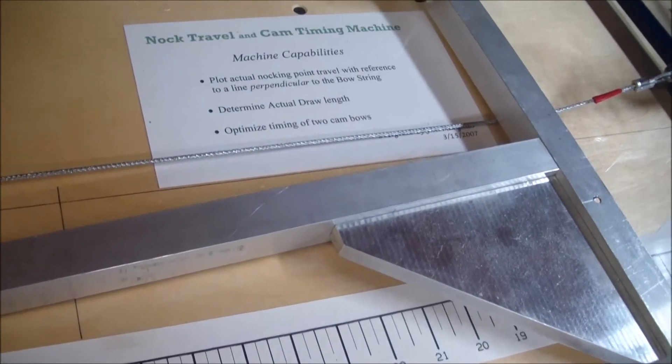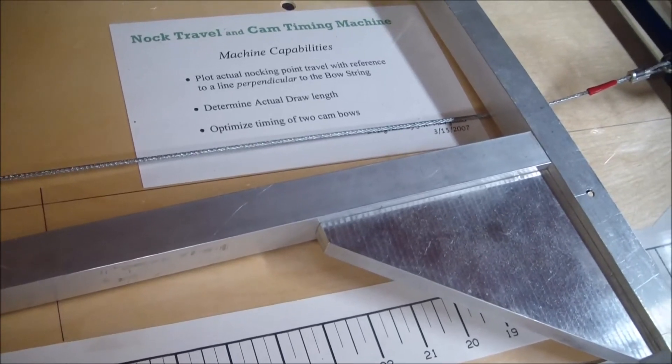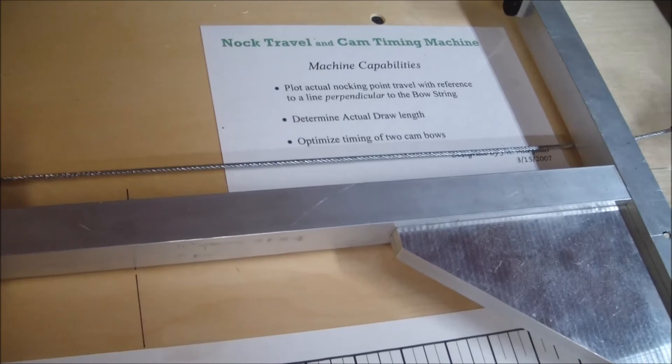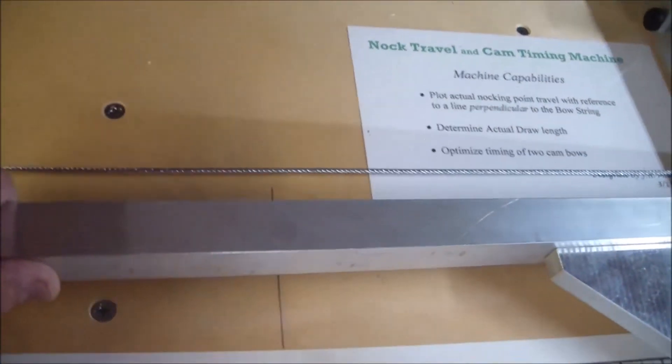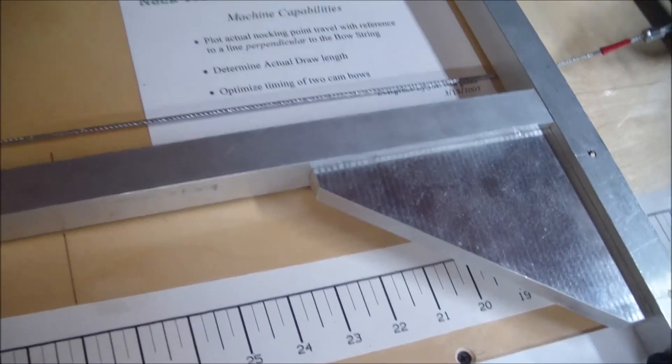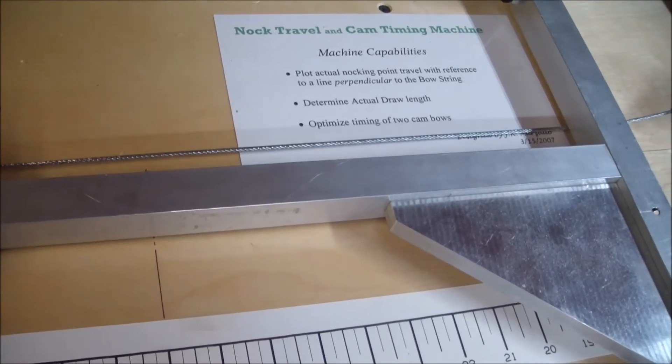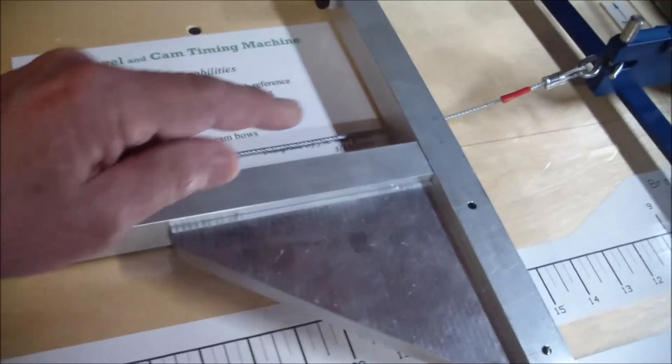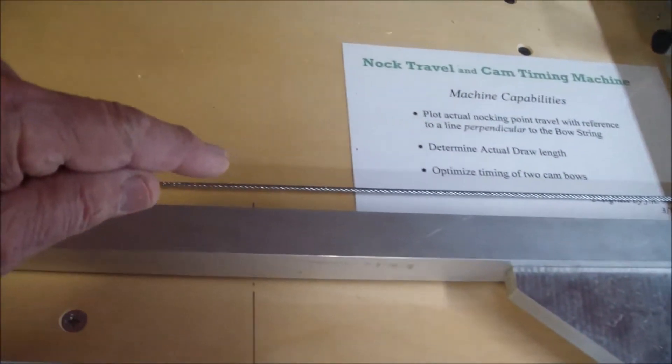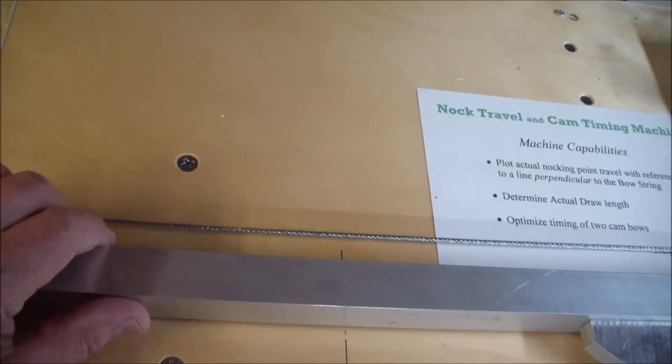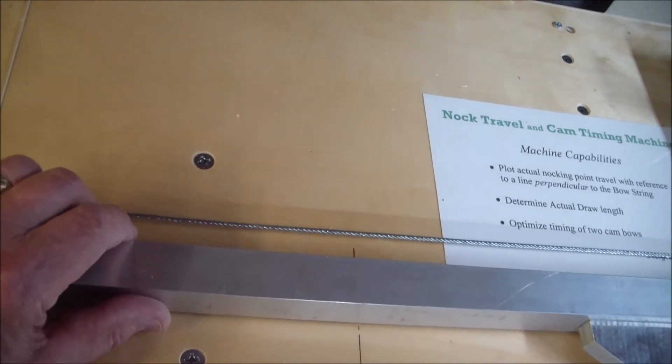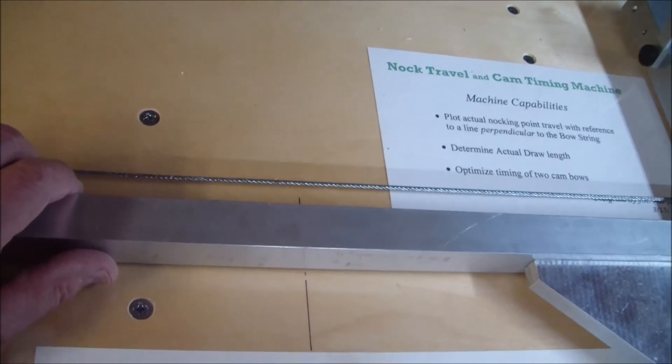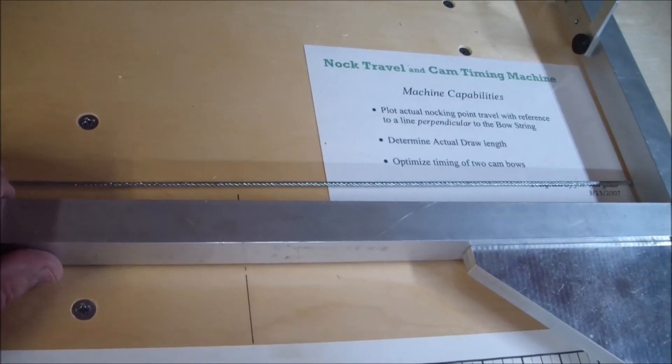So the knock travel can be a couple of things. It can be straight and also in line with this perpendicular line, or it can be straight and be up or down depending on if it rises or falls. As well as that, it cannot be straight. It can rise and have a number of up and downs travel to it. That wouldn't be good because that motion is transferred to the arrow when you shoot the bow, and it'll be harder to get good flight out of that arrow.